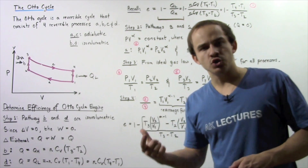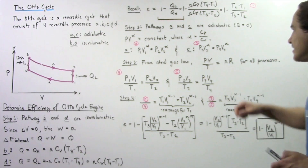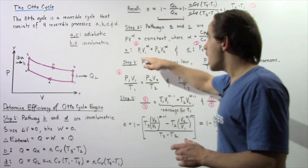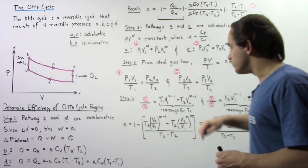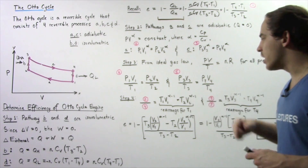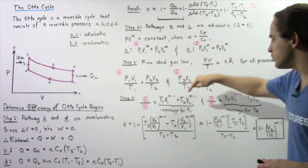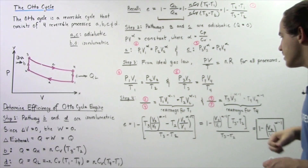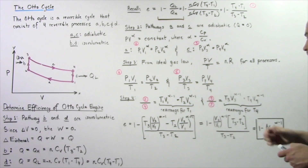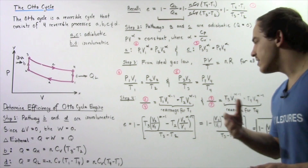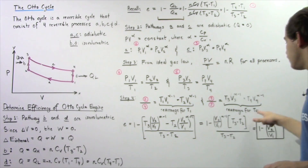In step 4, we take equation 2 and divide it by equation 4, and likewise take equation 3 and divide it by equation 5. The purpose is to eliminate the pressures. Equation 2 divided by equation 4 gives: T1 times V1 raised to alpha minus 1 equals T2 times V2 raised to alpha minus 1. Equation 3 divided by equation 5 gives a corresponding result.